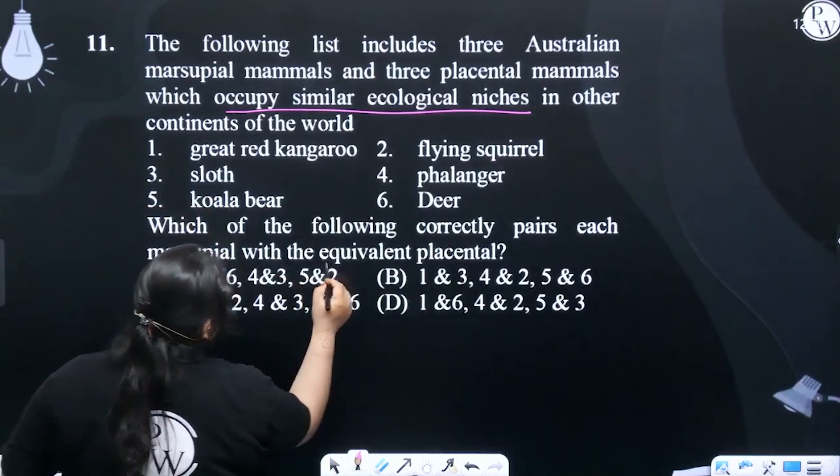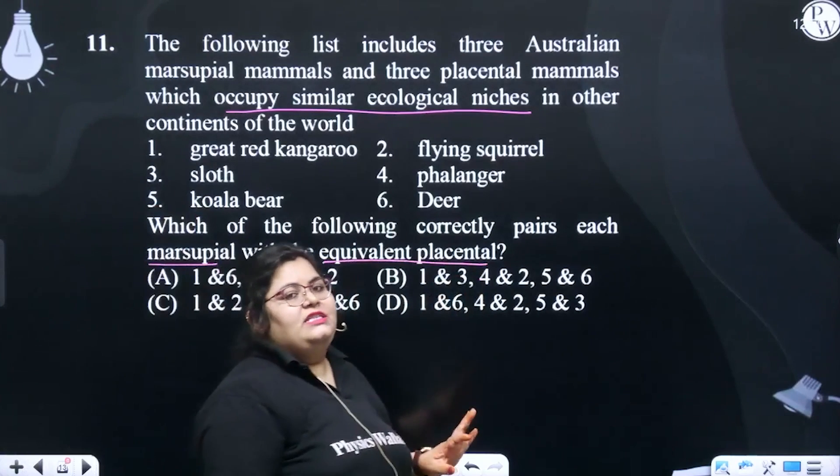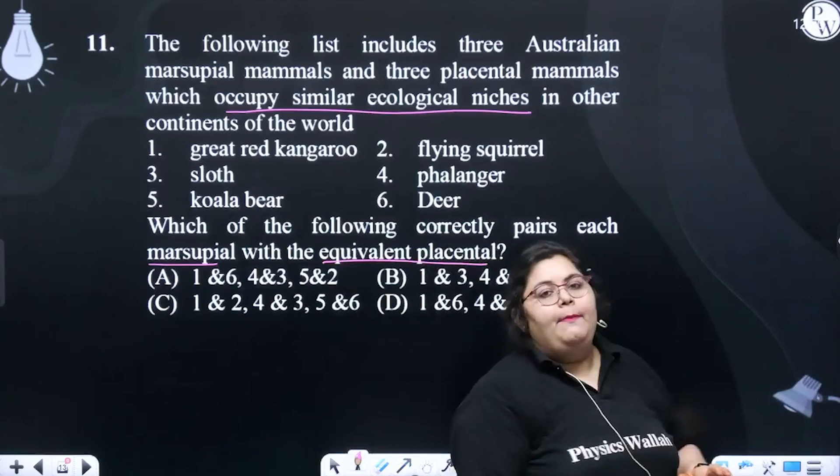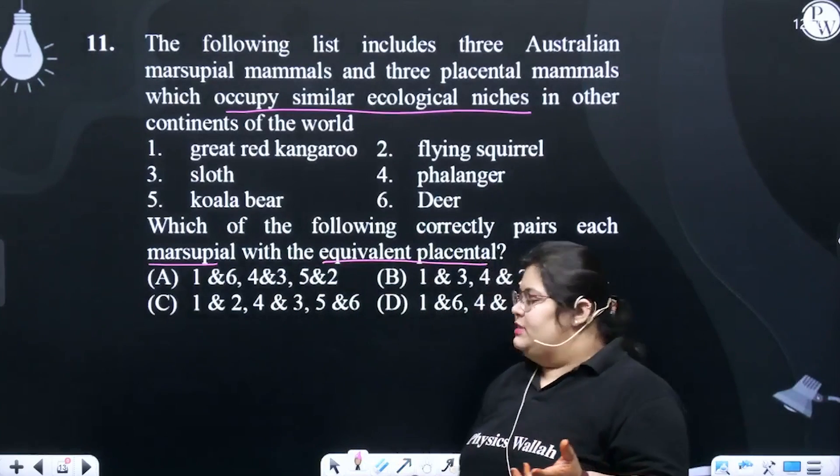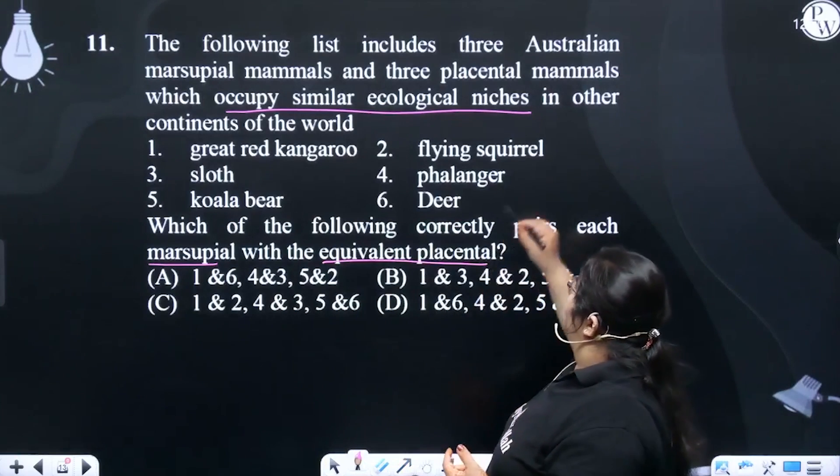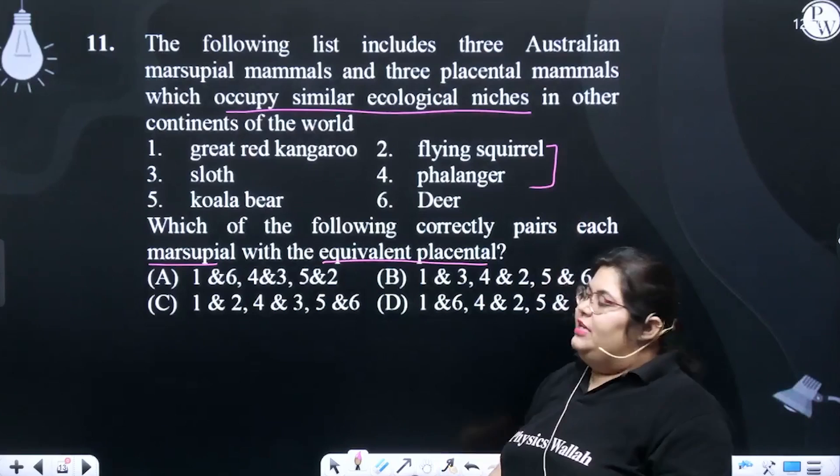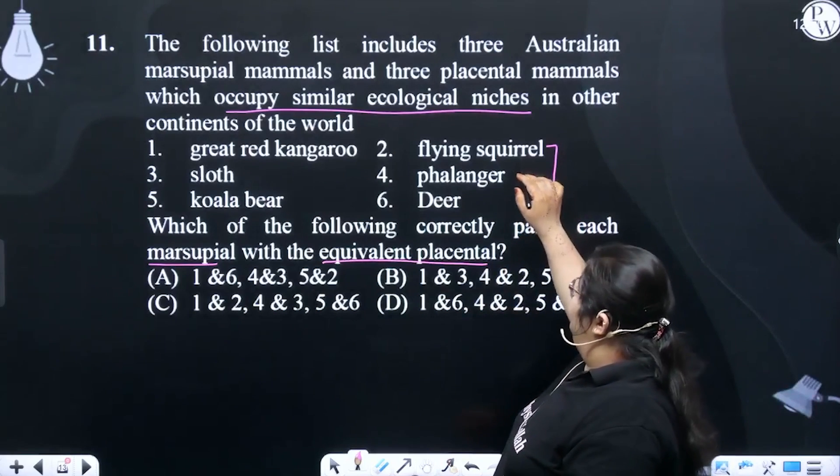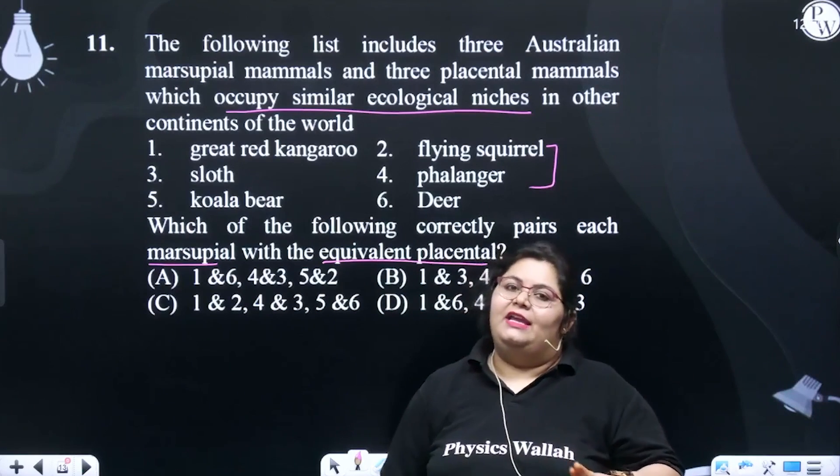The marsupial with its equivalent, which is the same as the placental mammal. So when we have seen adaptive radiation, we have seen the flying squirrel and the phalanger, which is a placental and a marsupial. They are both different groups, but they also have similarities.